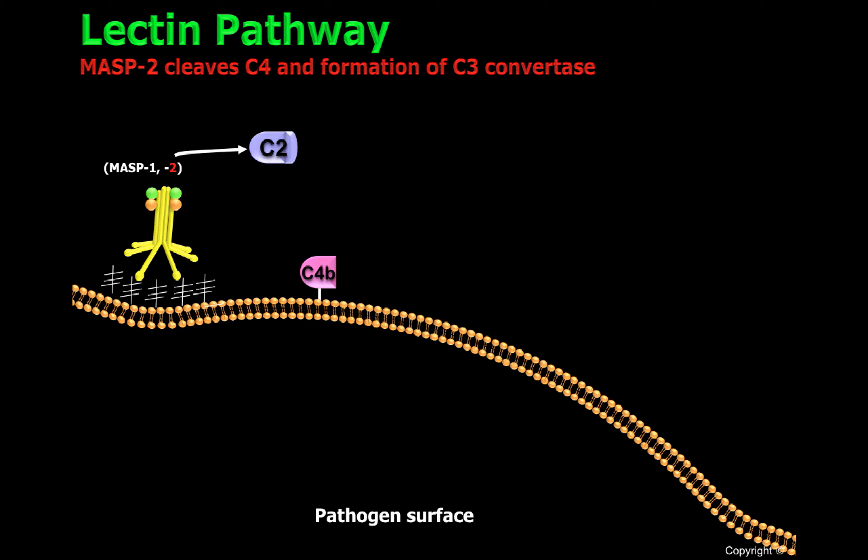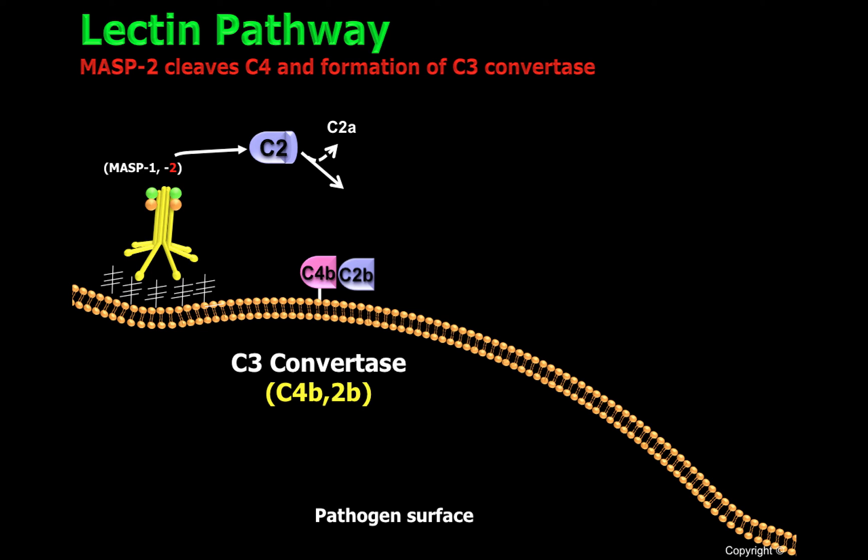MASP2 can also clip C2, generating C2A and C2B. If C2B is close enough and recognizes prebound C4B, it will generate a complex called C3 convertase, or C4B-C2B. It is important to remember that the C3 convertase and the C5 convertase of the classical and lectin pathways are identical.